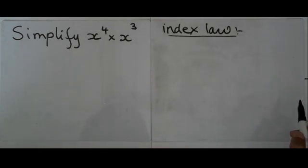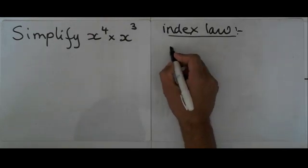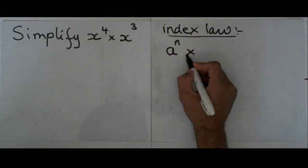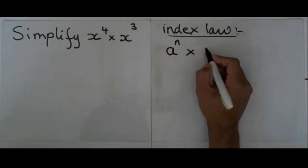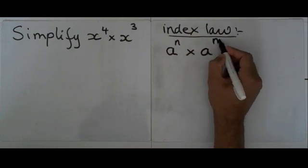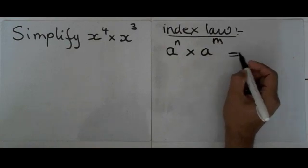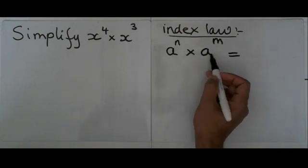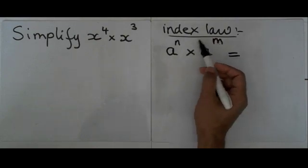So here we have a to the power of n times a to the power of m. If we have the same base, so basically the number which is at the bottom, then we can just add the powers together.